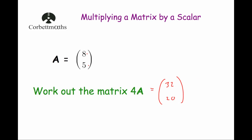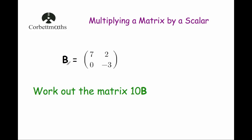Okay, our next question. This time we've got matrix B, which is a 2 by 2 matrix with elements 7, 2, 0, minus 3. We've been asked to work out the matrix 10B, so all we need to do is multiply each of these elements by 10.